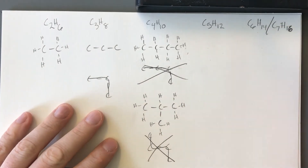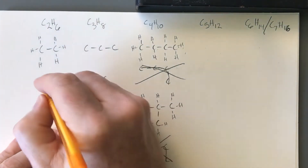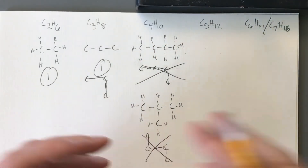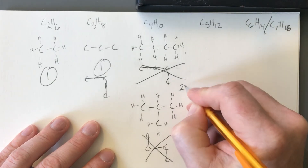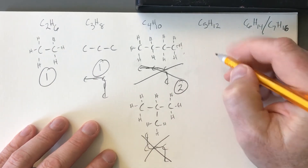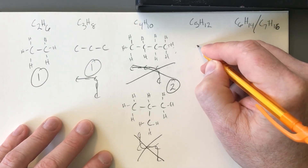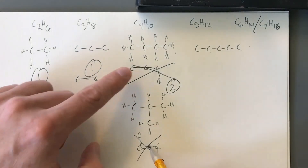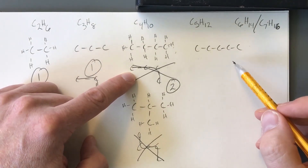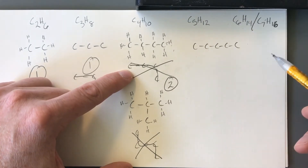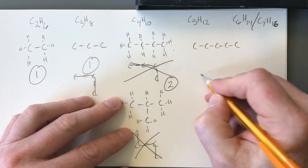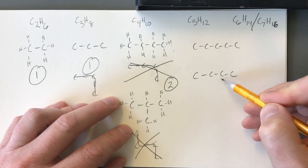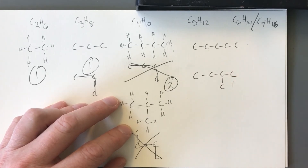For C2 we had only one possible structure, and for C3 only one as well. But the number of isomers starts to grow — essentially exponentially — as the molecule gets larger. At C4 there were two. Moving to C5, we want to see how many we can find. The basic one is the easiest: five carbons in a row. Remember, you cannot put a branch off the end and think you've made something new — a branch off the end is really just a continuation of the chain. So next, go a little smaller: try a chain of four.